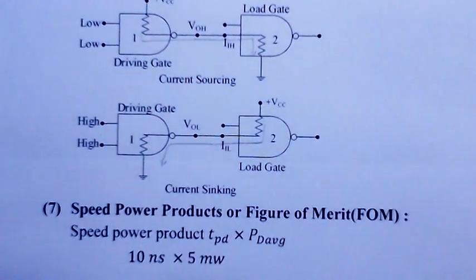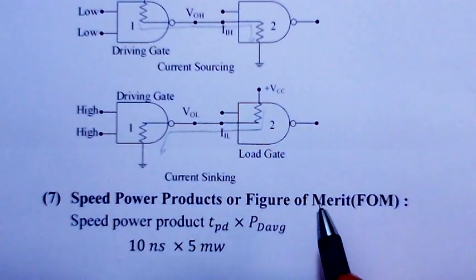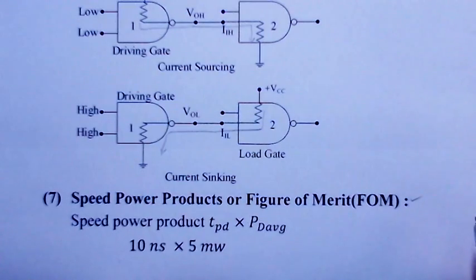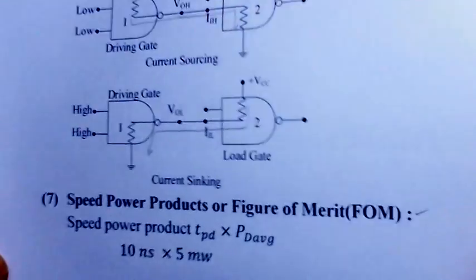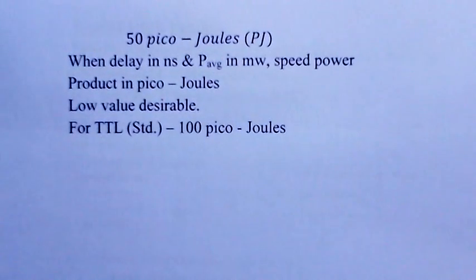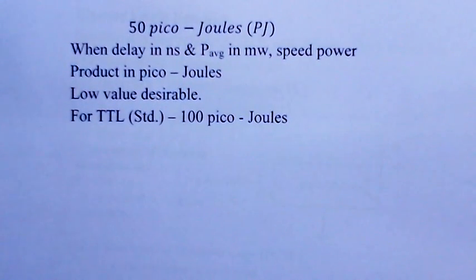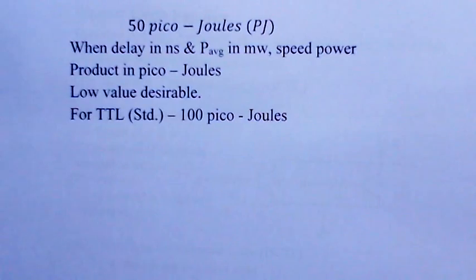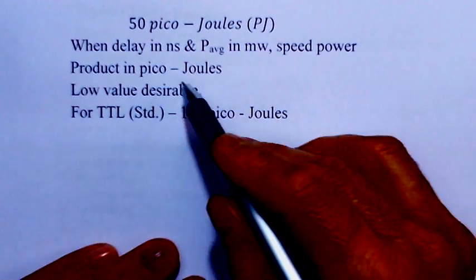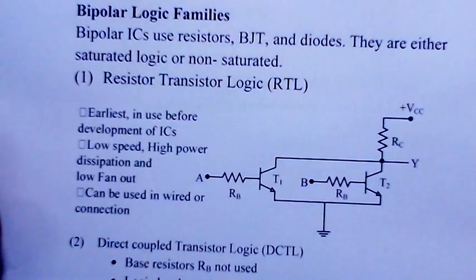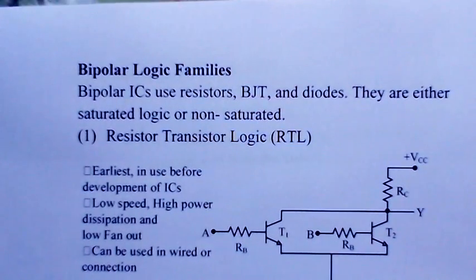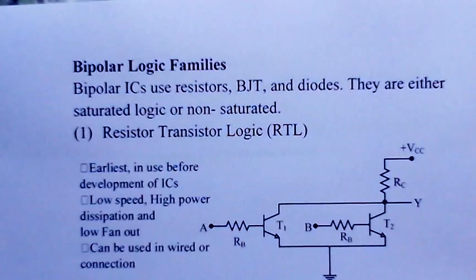The last parameter is the speed-power product, also called the figure of merit. It is represented as TPD multiplied by average power dissipation. Typically, when delay is in nanoseconds and average power is in milliwatts, the speed-power product comes out in picojoules — typically around 50 to 100 picojoules for standard TTL. This is the figure of merit for a logic family.